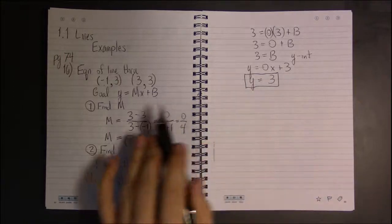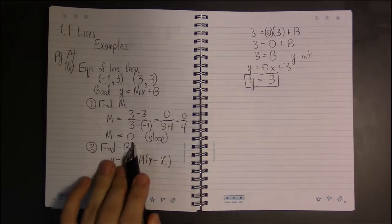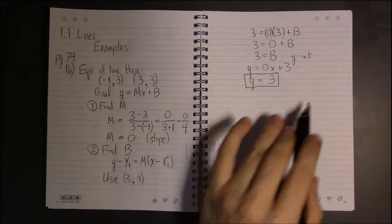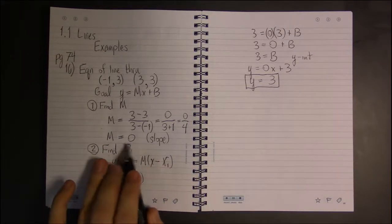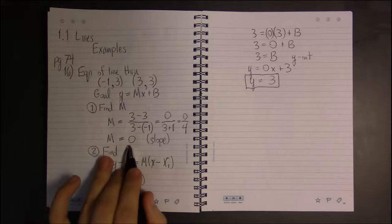Every horizontal line has a slope of 0, and vertical lines actually have an undefined slope or, if you will, a slope of infinity.